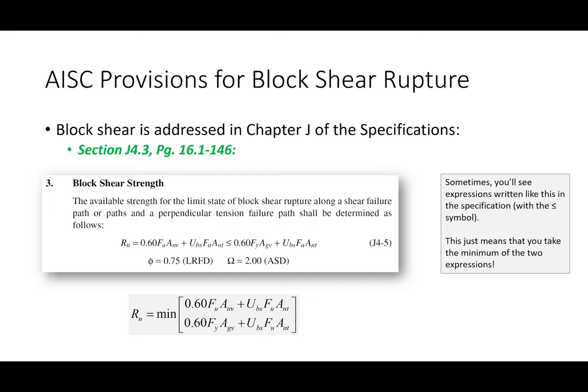The equation in the spec is formatted kind of strangely because it says the nominal resistance equals an expression less than or equal to another expression. Whenever you see that in the specification, it's just the spec's way of saying the capacity is the minimum of those two. It's saying the capacity is this, provided that it's less than this — so when you follow the if-then logic, it's really just the minimum of the two.